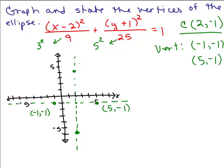So I go up 5 and I go down 5. What are those ordered pairs? That's (2, 4) and this is (2, -6). So we now have our center and we have our 4 vertices of the ellipse. And at this point, we're just going to go ahead and sketch what that ellipse looks like.